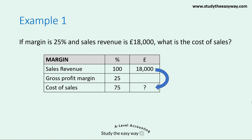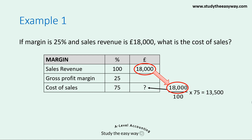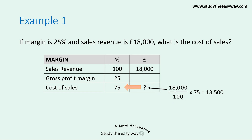The reason this technique is so useful is because you can use the same approach for every single question. To work out the cost of sales: take the figure you already know — sales revenue of £18,000. Look at the percentage column next to that known figure, which is 100. Divide £18,000 by 100, then multiply by the figure next to the question mark in the percentage column, which is 75. Putting those figures into your calculator gives an answer of £13,500 — that's the cost of sales.